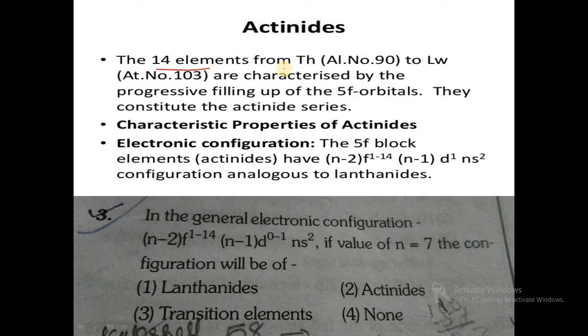The 14 elements from thorium, atomic number 90, to lawrencium, atomic number 103, are characterized by the progressive filling of the 5f orbitals. They constitute the actinide series. For electronic configuration, the 5f block element actinides have general electronic configuration (n-2)f1 to 14, (n-1)d0 to 1, and ns2, analogous to lanthanides. For actinide series, n is 7.